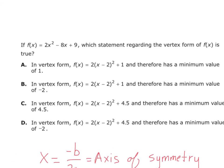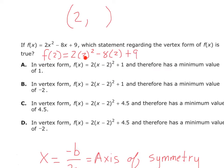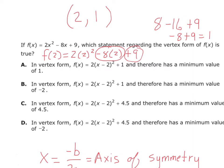Our vertex is at the point (2, something). To find the y value of the vertex, we calculate f of 2 — plug 2 into the function. So f of 2 equals 2 times 2 squared minus 8 times 2 plus 9. That gives us 8 minus 16 plus 9, which equals 1. So our vertex is at the point (2, 1).